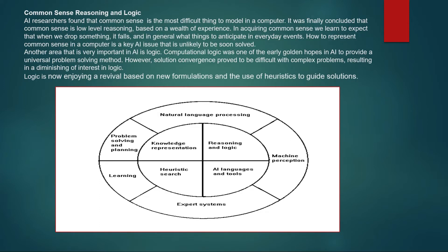The third element is common sense reasoning and logic. In AI, common sense is the most important yet most difficult thing to model in a computer. It was concluded that common sense is low-level reasoning based on a wealth of experience. In acquiring common sense, we learn to expect that when we drop something it falls, and in general what to anticipate in everyday, day-to-day events.